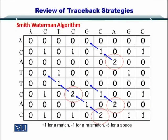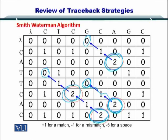Next we looked at the local alignments. The traceback strategy for local alignments was that we selected the highest elements within the alignment matrix, and then traced them back until we reached a zero. In each case we reached the zero and stopped the traceback right there.